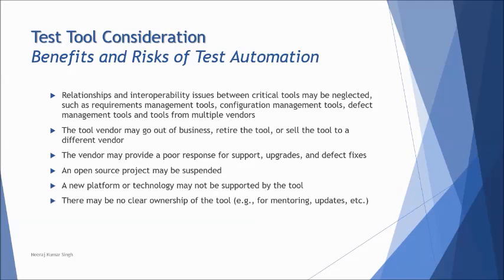Relationship and interoperability issues between critical tools may be neglected. Some tools come with an interoperability option, meaning data can be exchanged between tools. For example, from a single vendor you might have a test management tool and a test automation tool that can be integrated — the test management tool controls automation execution, and results are logged directly in it. Being unaware of this feature might lead you to procure two tools from different vendors and do manually what could have been automated through interoperability.